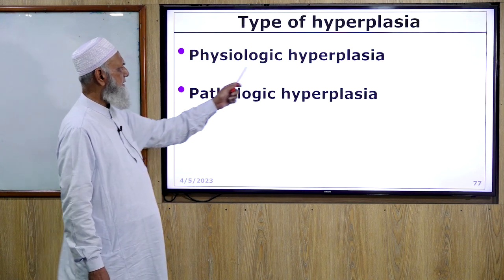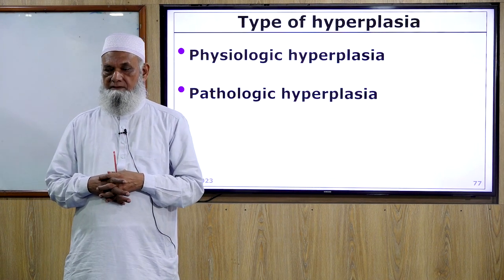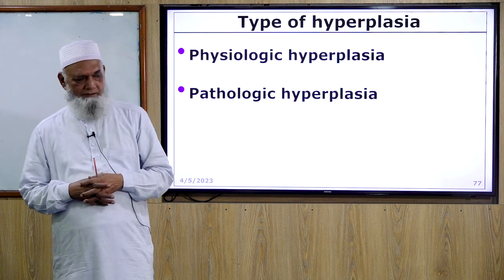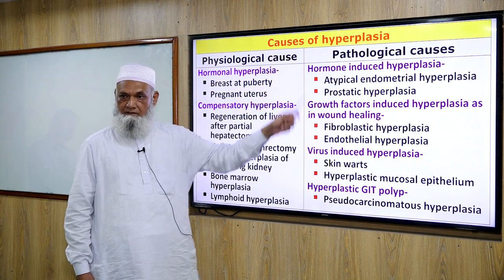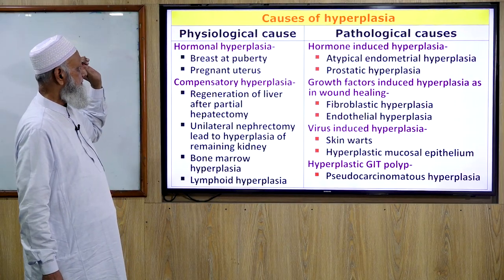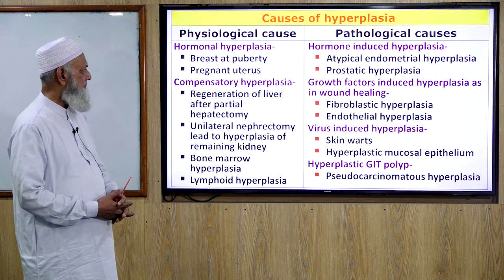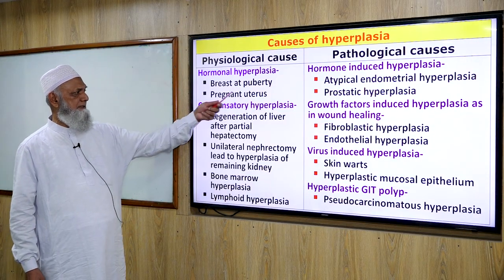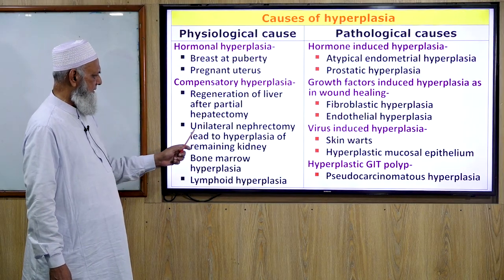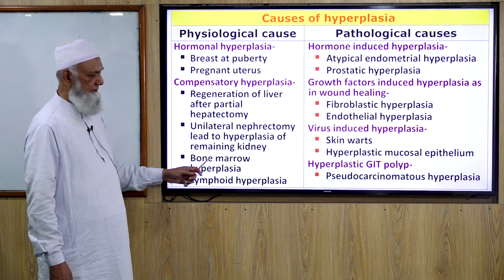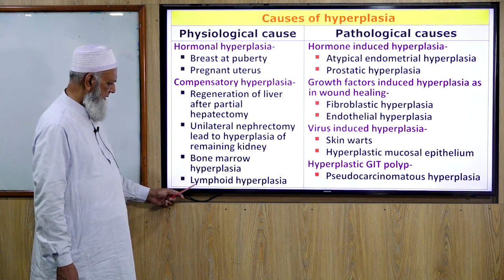Types of hyperplasia: physiological hyperplasia and pathological hyperplasia. Physiological causes include hormonal hyperplasia — breast at puberty and pregnant uterus — and compensatory hyperplasia, such as regeneration of the liver after partial hepatectomy, hyperplasia of the opposite kidney after unilateral nephrectomy, bone marrow hyperplasia, and lymphoid hyperplasia.